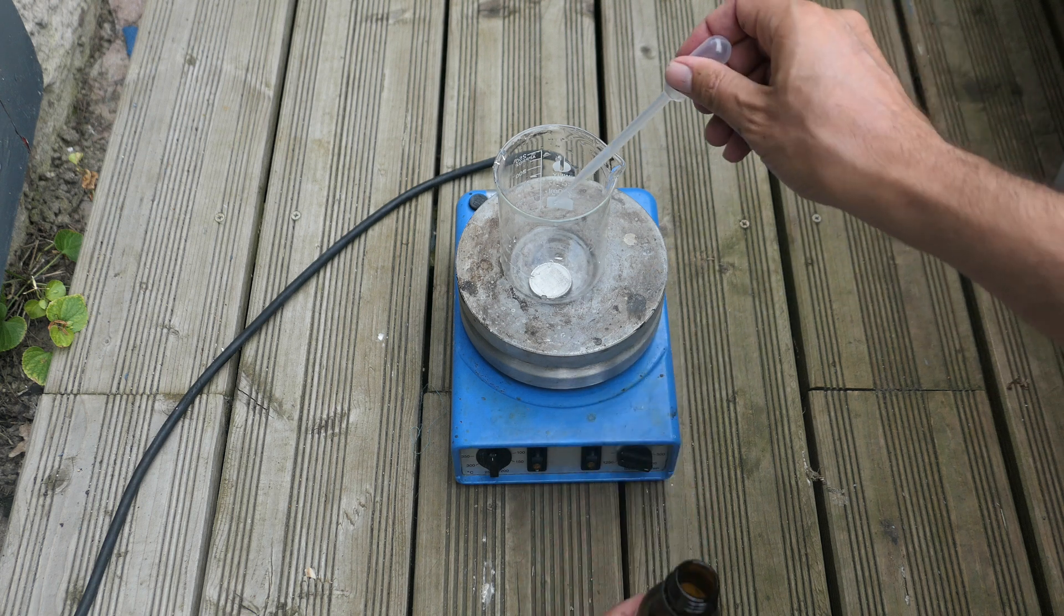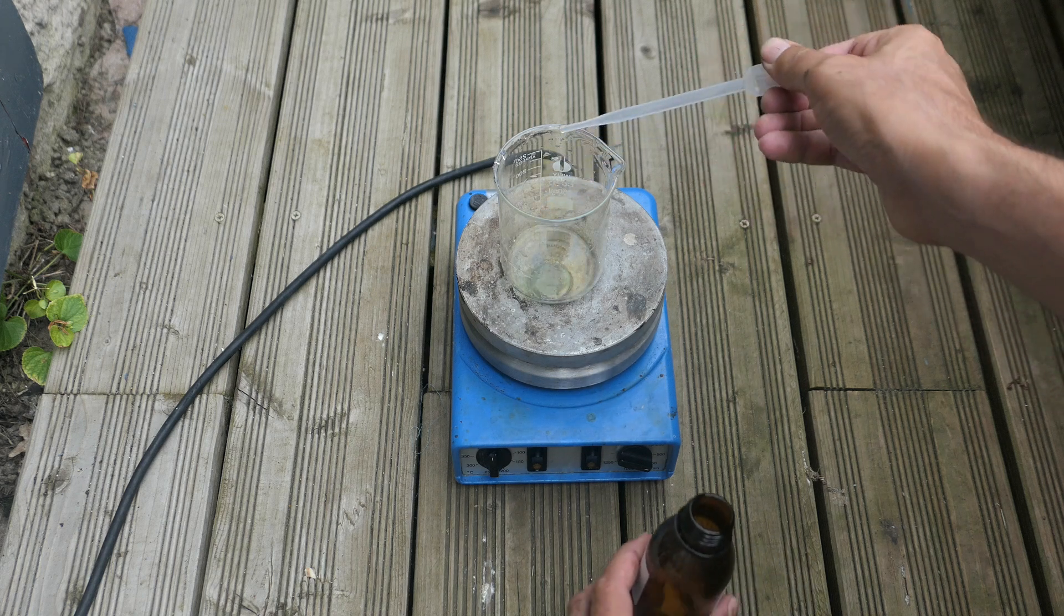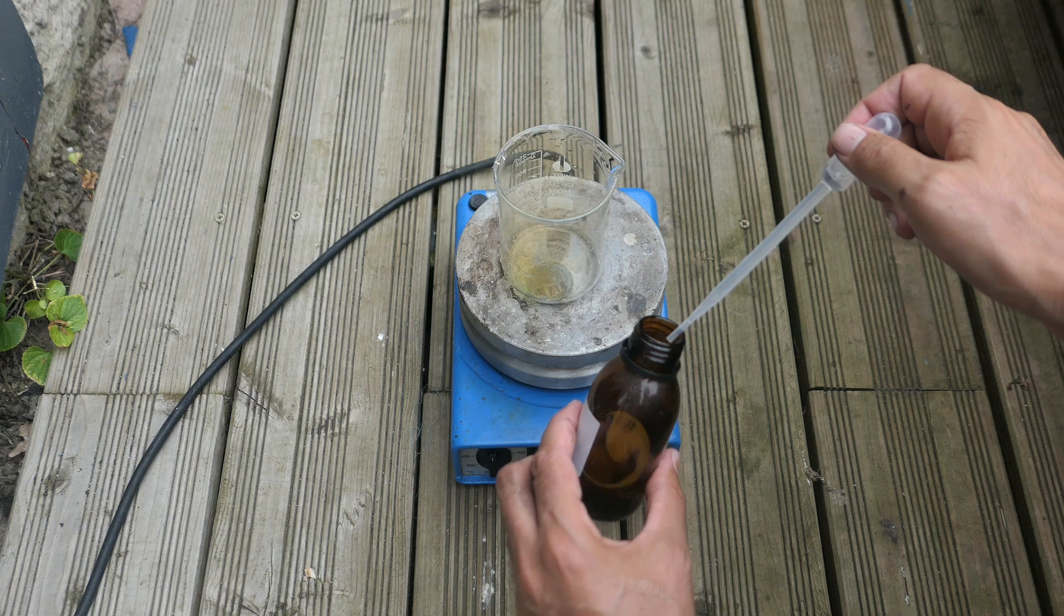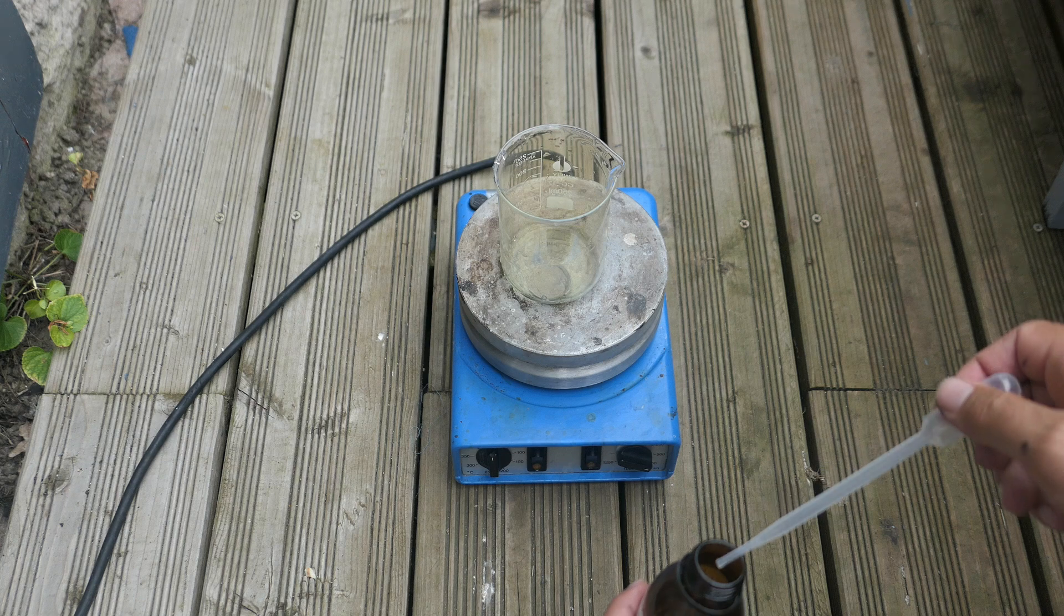Place the coin in a beaker, and add a few milliliters of nitric acid. The acid will dissolve metals and form nitrates. The reaction produces a lot of nitrogen dioxide, and must be performed outdoors, away from people.